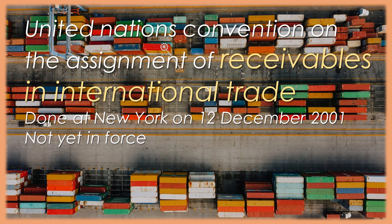Article 7. Principles of Interpretation. 1. In the interpretation of this Convention, regard is to be had to its object and purpose as set forth in the preamble, to its international character and to the need to promote uniformity in its application and the observance of good faith in international trade. 2. Questions concerning matters governed by this Convention that are not expressly settled in it are to be settled in conformity with the general principles on which it is based or, in the absence of such principles, in conformity with the law applicable by virtue of the rules of private international law.